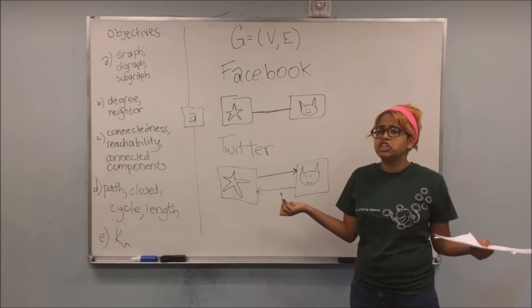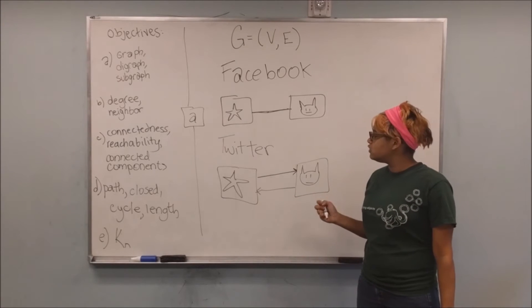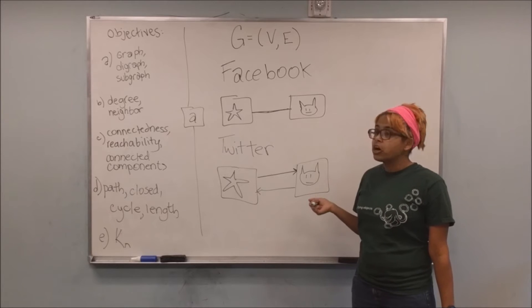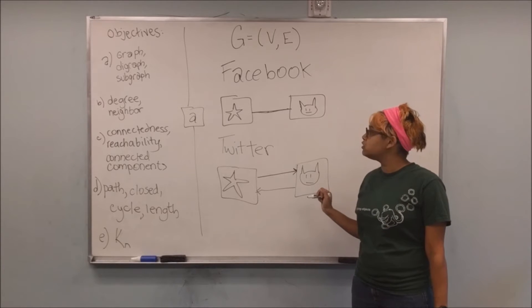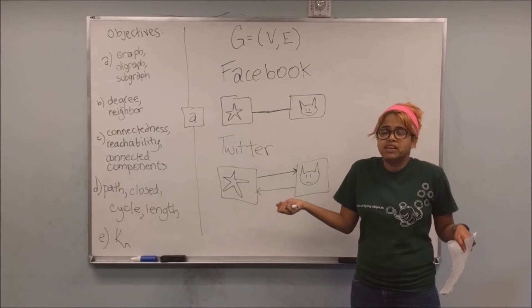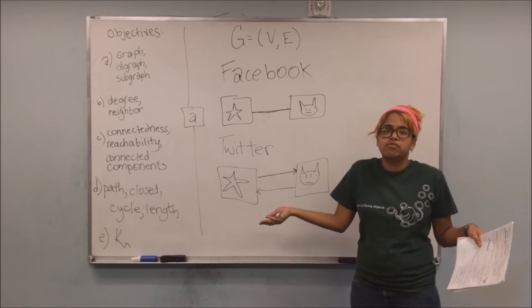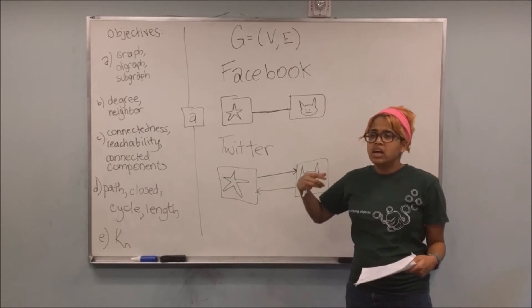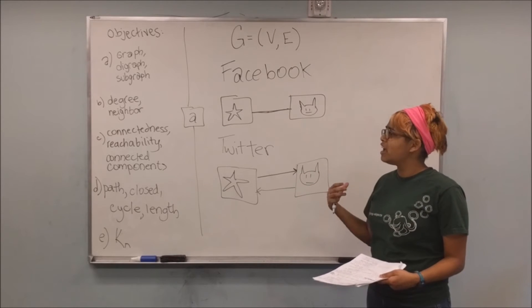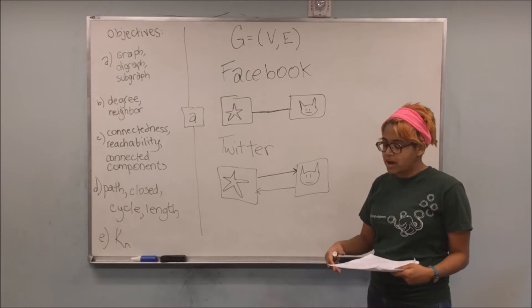This could go in both directions or it could not. And as you can see here, when I was drawing the edges or arcs for Twitter, having an arrow there was important. Whereas for Facebook, it was not important because the friendship is in both directions every single time. And so that kind of motivates what a graph is and what a digraph or directed graph is.